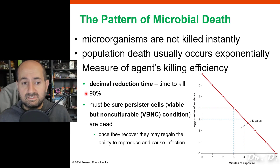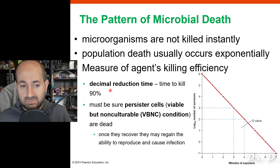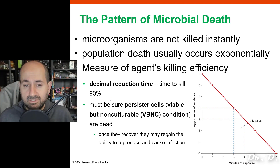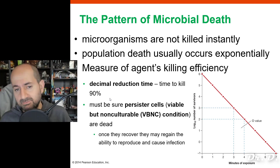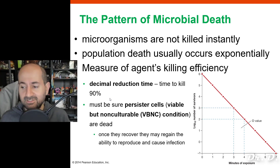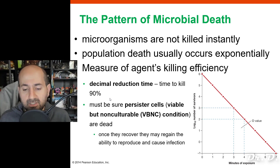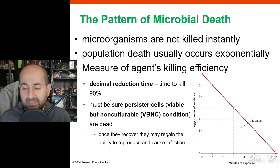Every agent has a decimal reduction time — how long it takes to kill 90% of the population. In the lab, if you spill bacteria on your table, I tell you to spray the area with disinfectant and wait five minutes before wiping. The decimal reduction time is in the five-minute range — you want to destroy as many bacteria as possible before you wipe.